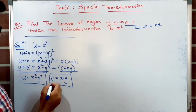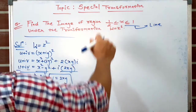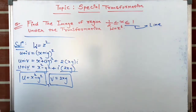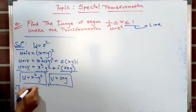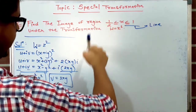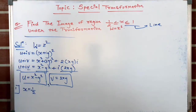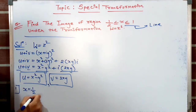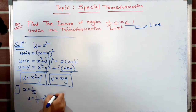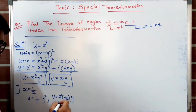These steps earn one mark in the exam. Now, since x is between 1/2 and 1, we first take x = 1/2. When x = 1/2: u = 1/4 − y² and v = 2·(1/2)·y = y. So v = y.